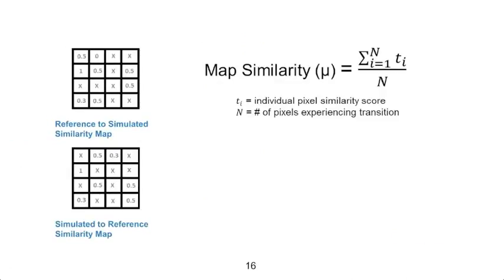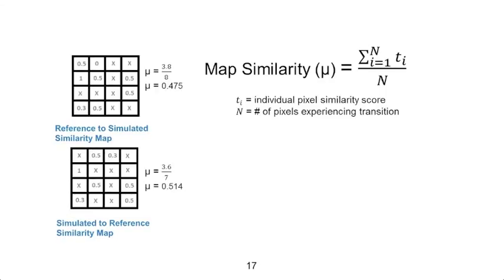Once we have our two similarity maps, we can calculate a similarity score for each map. The map similarity score is the sum of all the similarity scores for each pixel divided by the number of pixels that experience transition. So for our top map, we add the values, which equal 3.8, and divide by 8, since there are 8 pixels experiencing change.